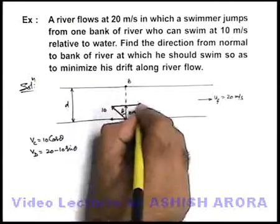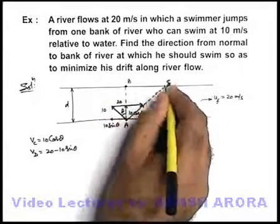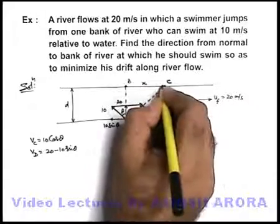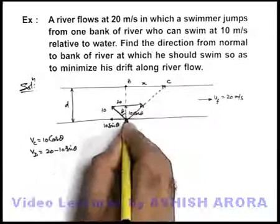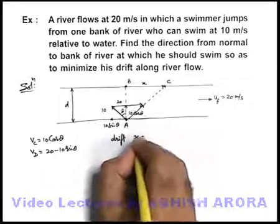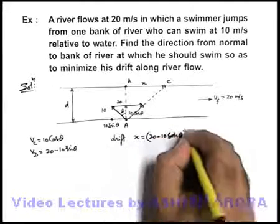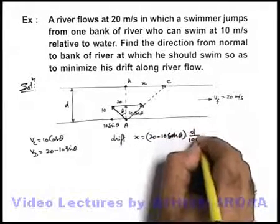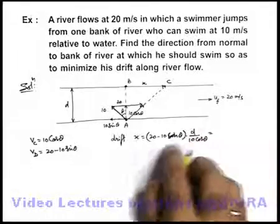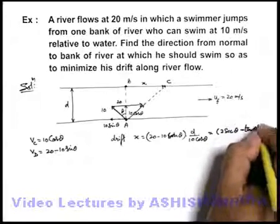When the river velocity of 20 is added, the resultant will be in a direction such that he reaches point C, and the distance x will be the total drift. This drift can be calculated by multiplying the drift velocity by the time taken by the swimmer to cross the river. So drift x = (20 − 10 sin θ) × d / (10 cos θ), which simplifies to (2 sec θ − tan θ) × d.